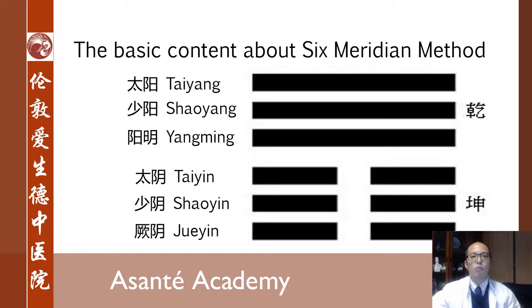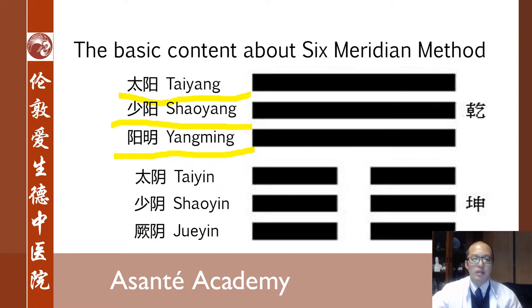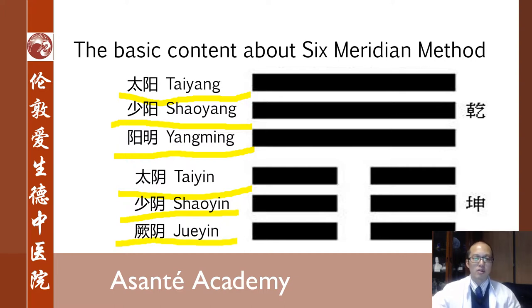Now let's talk about what the six meridians are. The six meridians include: Taiyang meridians, Shaoyang meridians, Yangming meridians, Taiyin meridians, Shaoyin meridians, and Jueyin meridians. There are six kinds of meridians.